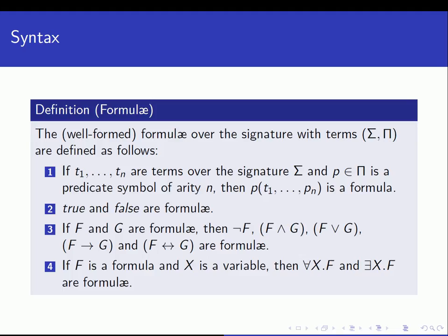A more formal definition of formulas: a formula over the signature with terms sigma and pi — where sigma is the set of functions and pi is the set of predicates — states that if t1 up to tn are terms over the function signature, and p in pi is a predicate symbol of arity n, then p(t1, ..., tn) is a formula. True and false are also formulas.